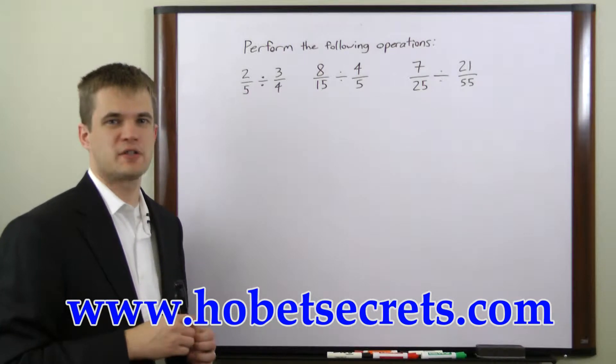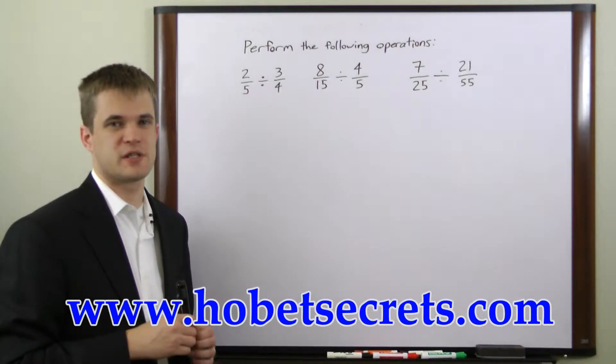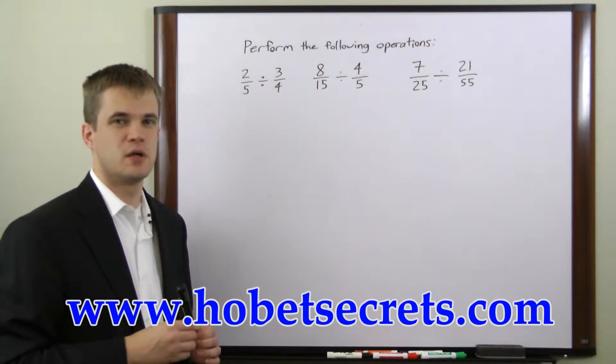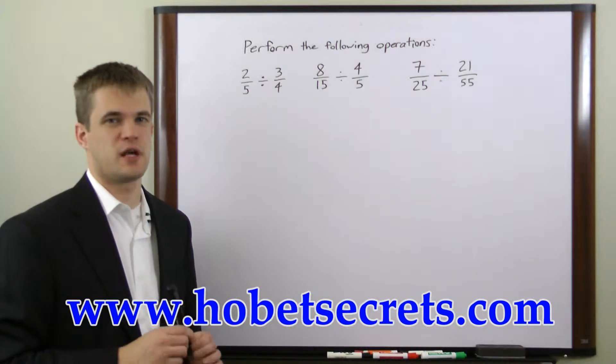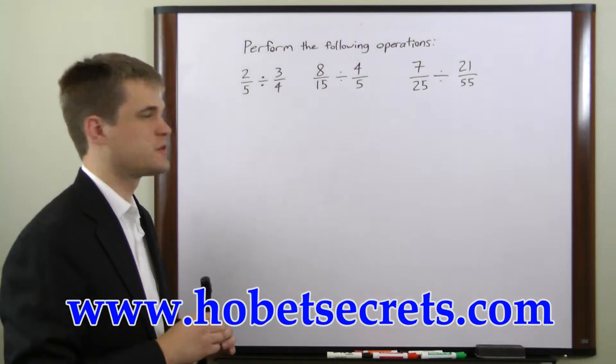The process for dividing one fraction by another is very similar to the process for multiplying two fractions. The difference is that when dividing there's an extra step. Let's take a few examples.